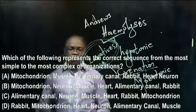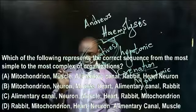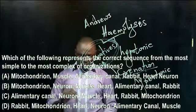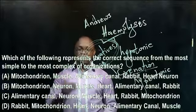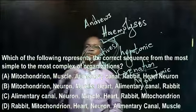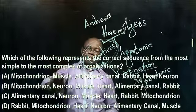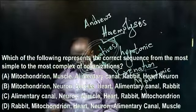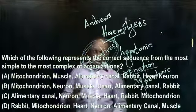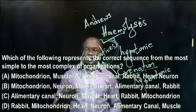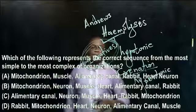The smallest level of life is a cell, which contains organelles. The answer is option B. The mitochondrion is an organelle, the neuron is a cell, the muscle is a tissue, the heart is an organ, the alimentary canal is a system, and the rabbit is an organism. Organelles make up cells, cells make up tissues, tissues make up organs, organs make up systems, and systems make up organisms. The answer is option B.